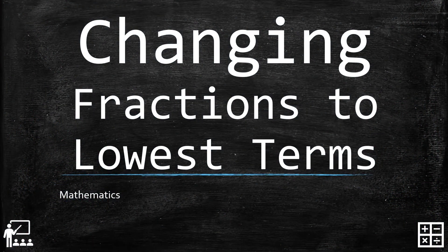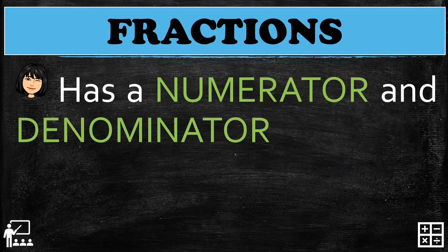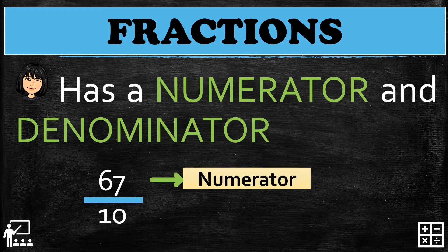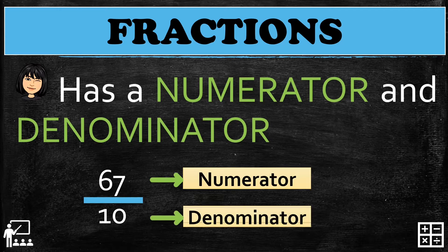This video lesson is about changing fractions to lowest terms. Fractions have a numerator and a denominator. The numerator is located above or at the top of the fraction, while the denominator is located at the bottom or below the fraction.